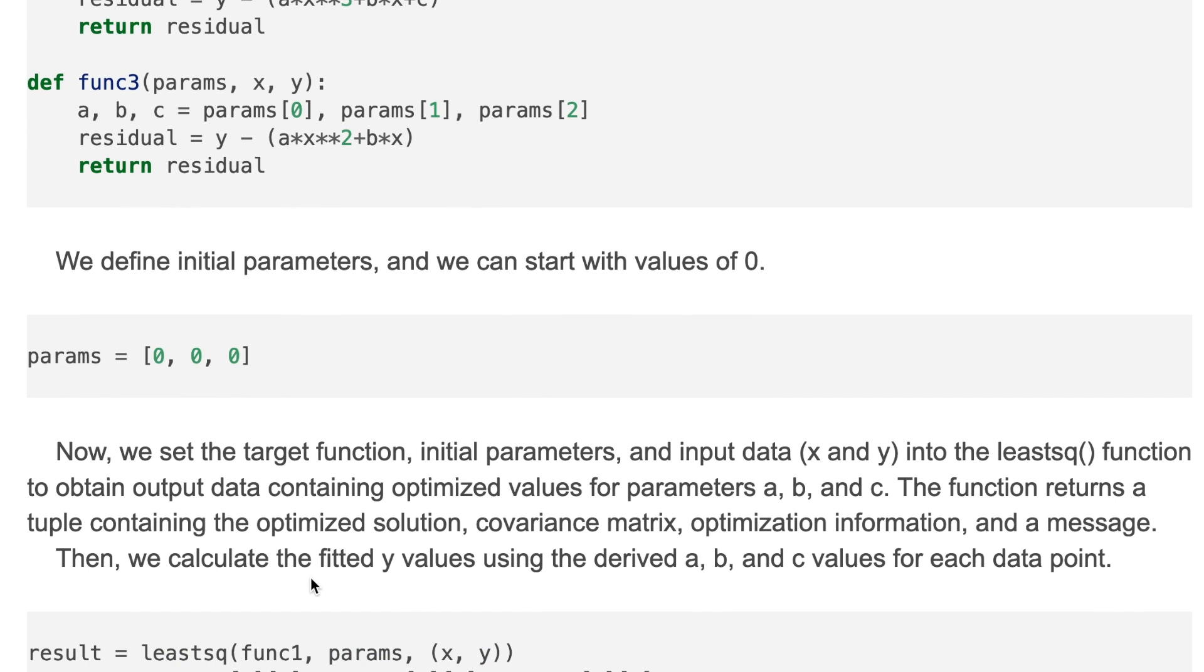Now we set the target function, initial parameters, and the input data into the leastsq function to obtain output data containing optimized values for parameters a, b, and c. The function returns a tuple containing the optimized solution, covariance matrix, optimization information, and a message.